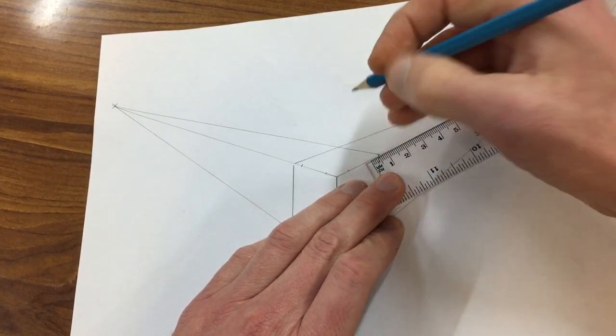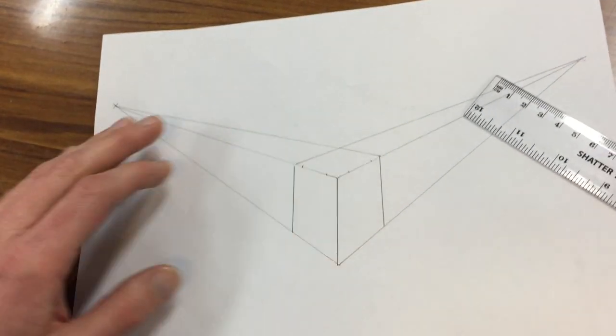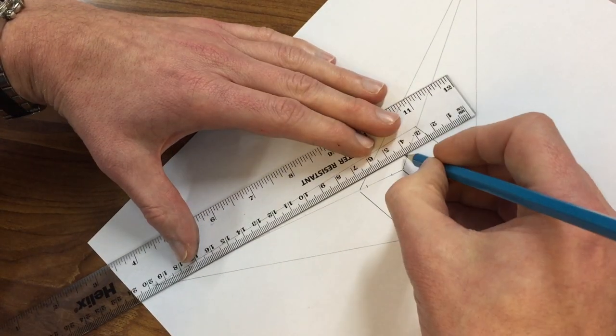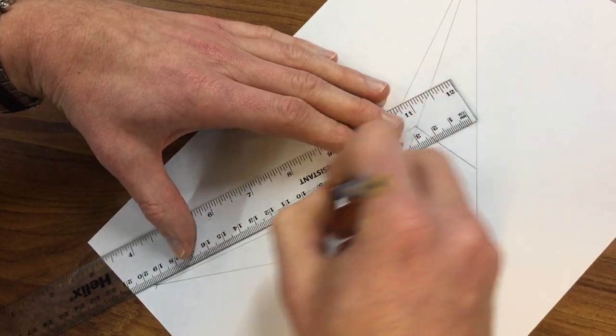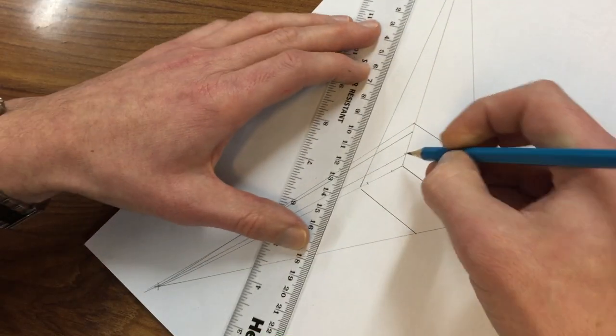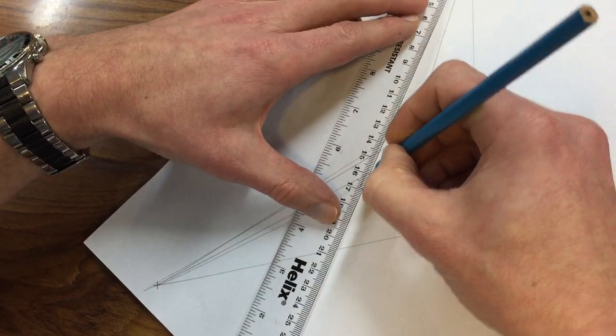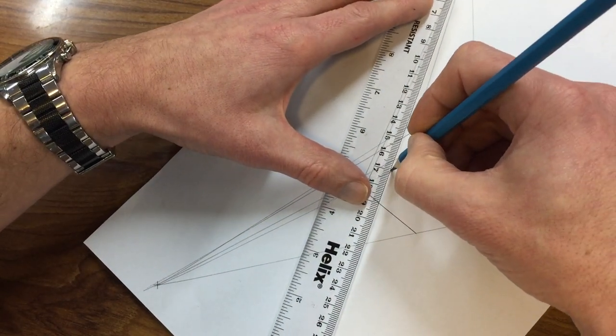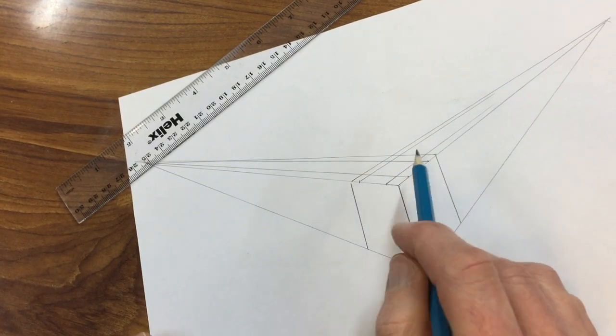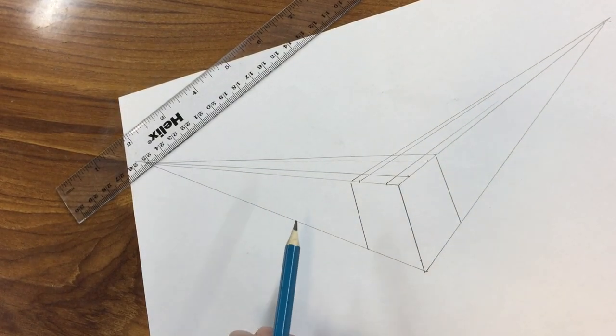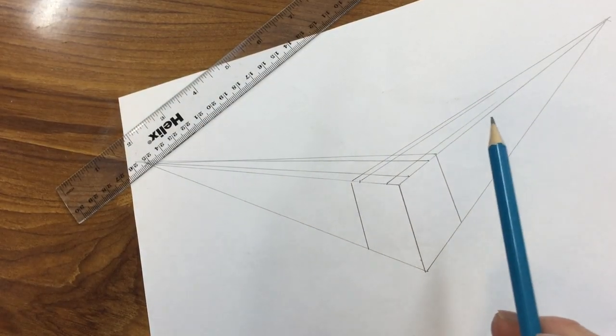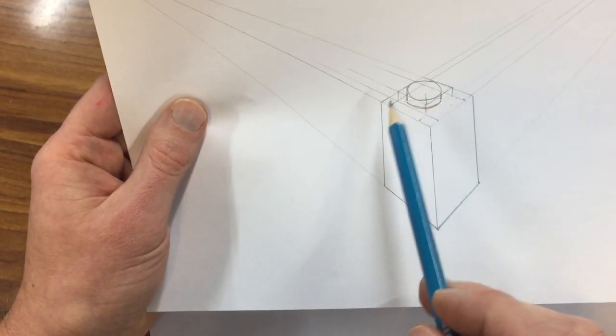This is where it gets a little bit complicated. I'm gonna do another set of guidelines now right to the vanishing points. Same here to the vanishing points. And this has given me an area where the cylinder is gonna go, and our challenge is to build up a little box on top which will help us do an accurate cylinder.